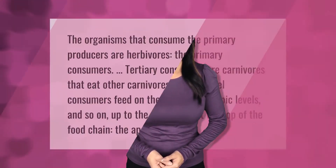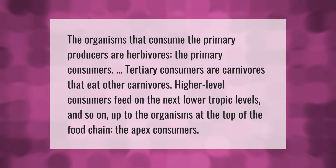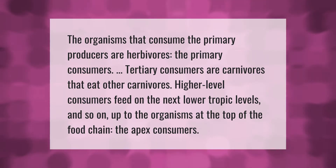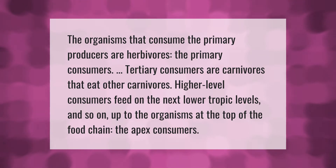The organisms that consume the primary producers are herbivores — the primary consumers. Tertiary consumers are carnivores that eat other carnivores. Higher-level consumers feed on the next lower trophic levels, and so on up to the organisms at the top of the food chain: the apex consumers.